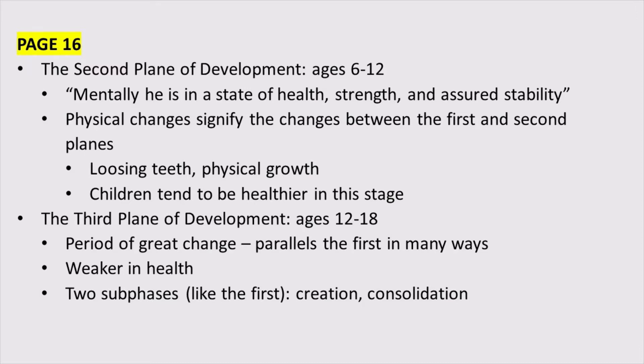She also said that between the ages of twelve and eighteen — just like the first plane — there are two sub-phases: the creation phase and the consolidation phase, three years each. So you've got twelve to fifteen as creation and fifteen to eighteen as consolidation — the child is creating the adult. You can almost see those sub-phases going on naturally in our traditional public school system too, since we naturally divide middle school and high school. We do recognize there's a very real difference between a twelve-to-fifteen-year-old and a fifteen-to-eighteen-year-old.